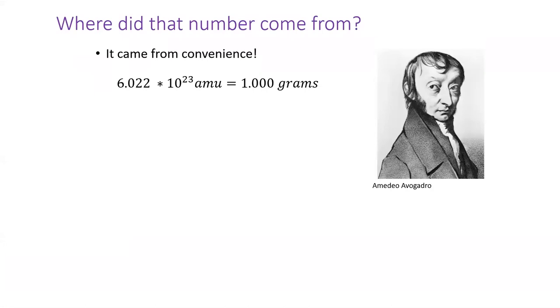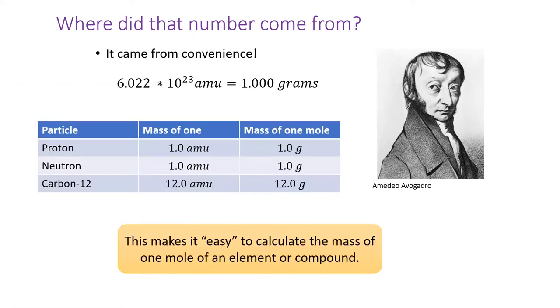The number one mole didn't just pop into existence. As I mentioned, it's the conversion between atomic mass units and grams. So while one proton weighs one atomic mass unit, one mole of protons weighs one gram. This makes it easy to use the periodic table to calculate the mass of one mole of an element or compound.